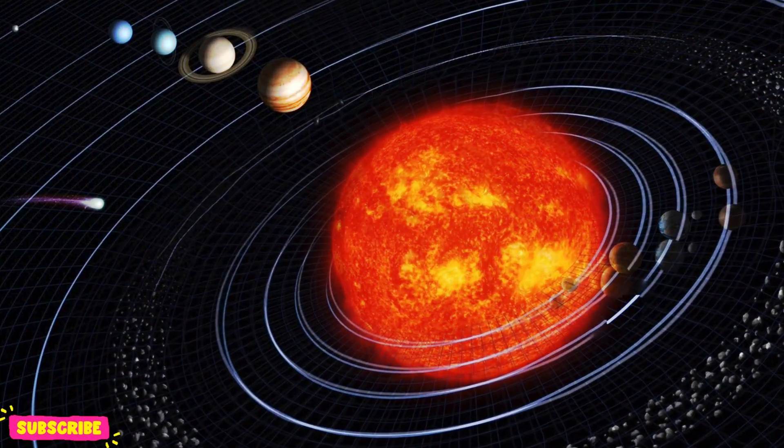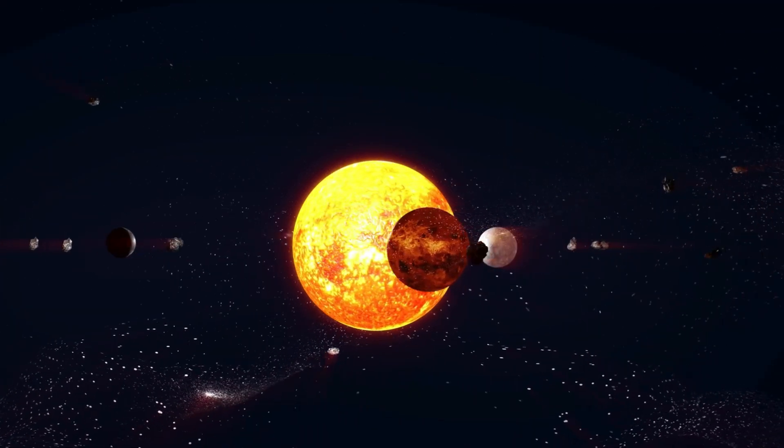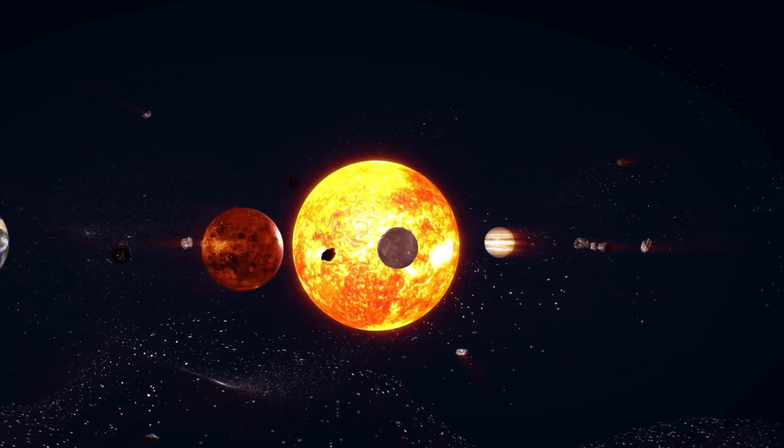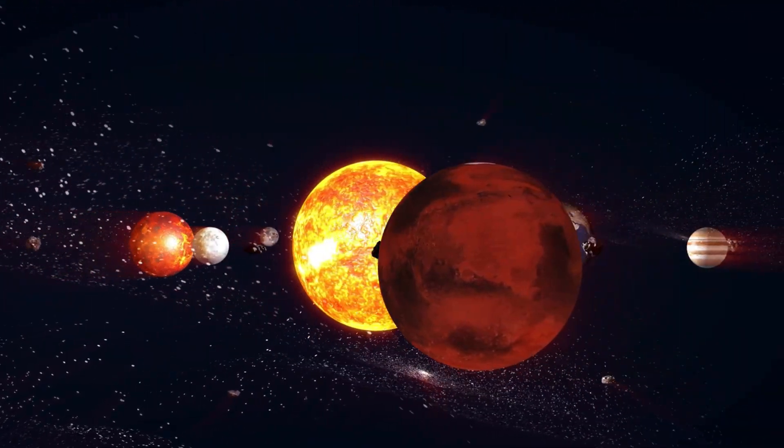The sun, the big hot star. The sun is at the center of the solar system. It's a giant ball of burning gas that gives us light and heat. Without the sun, we wouldn't be able to live.